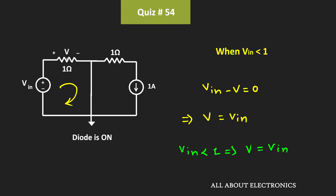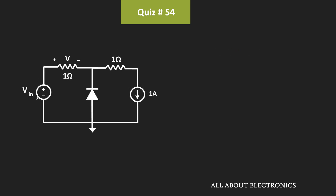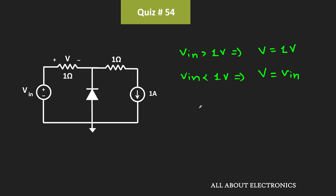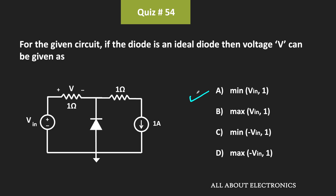In this way, this voltage V will depend on the value of Vin. Whenever Vin is greater than 1 volt, V is equal to 1 volt, and whenever Vin is less than 1 volt, V is equal to Vin. So we can say that V is equal to the minimum of Vin and 1 volt — whichever is minimum between Vin and 1 volt will be the value of V. From this we can say that for the given question, option A is the correct answer.